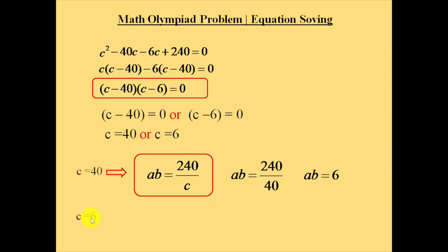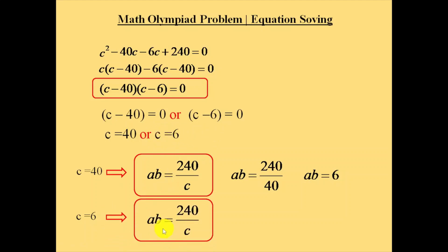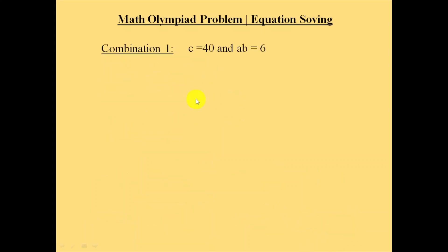Now take the second combination where c is equal to 6. Substituting into the same equation gives a into b is equal to 240 by 6, which gives a into b is equal to 40. So for the first combination, c equals 40 and a into b equals 6; for the second, c equals 6 and a into b equals 40.